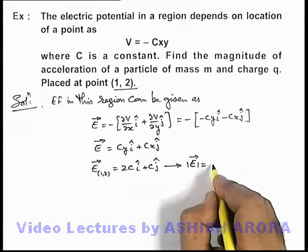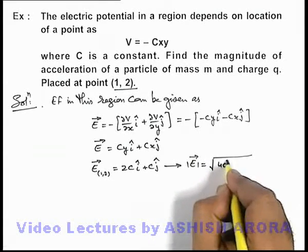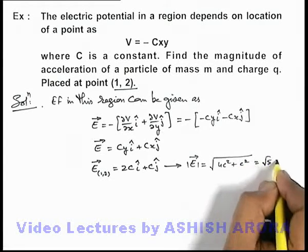It will be simply root of 4C² + C², that will be √5C.